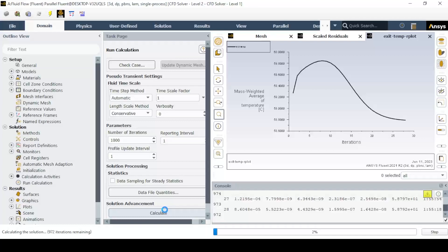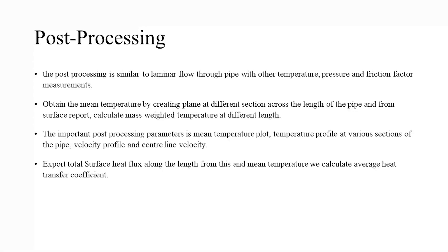The post-processing is similar to laminar flow-through pipe with other temperature, pressure, and friction factor measurements. Obtain the mean temperature by creating planes at different sections, and from surface report, calculate mass weighted temperature at different lengths.